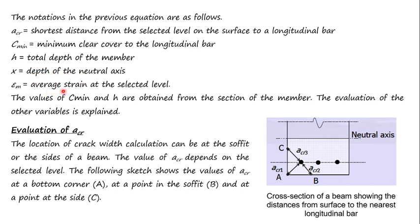ε_m is the average strain at the selected level. The values of c_min and H are obtained from the section of the member — the total depth and clear cover can be read directly from the cast member. The evaluation of other variables such as X, a_cr, and average strain is explained next.